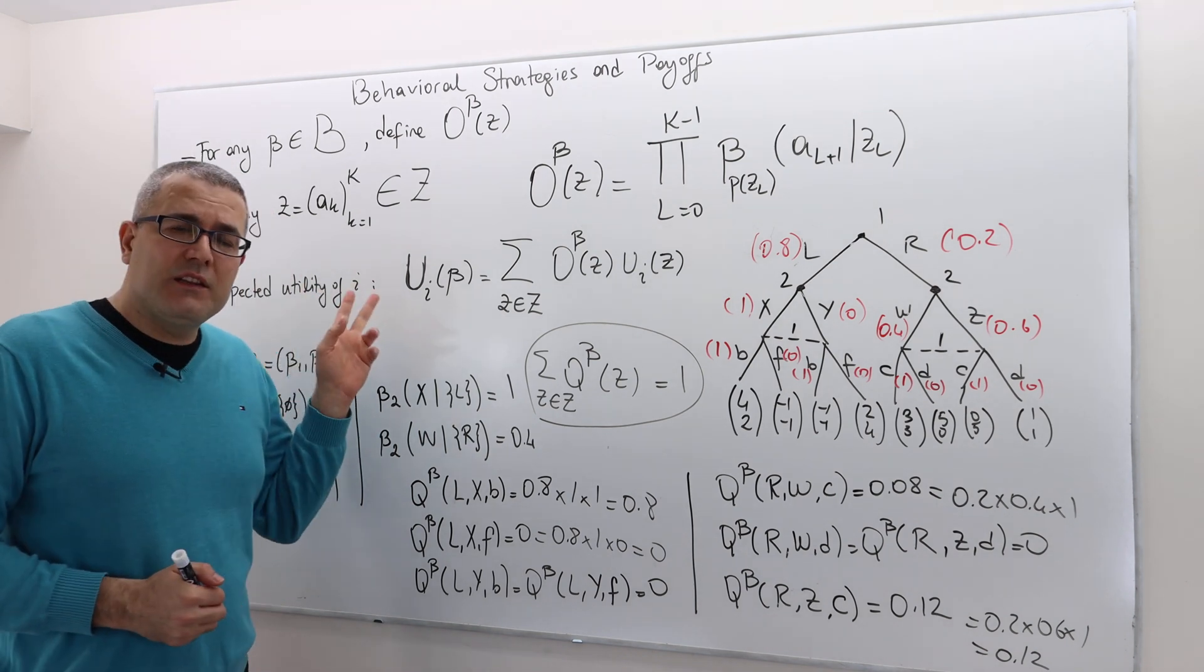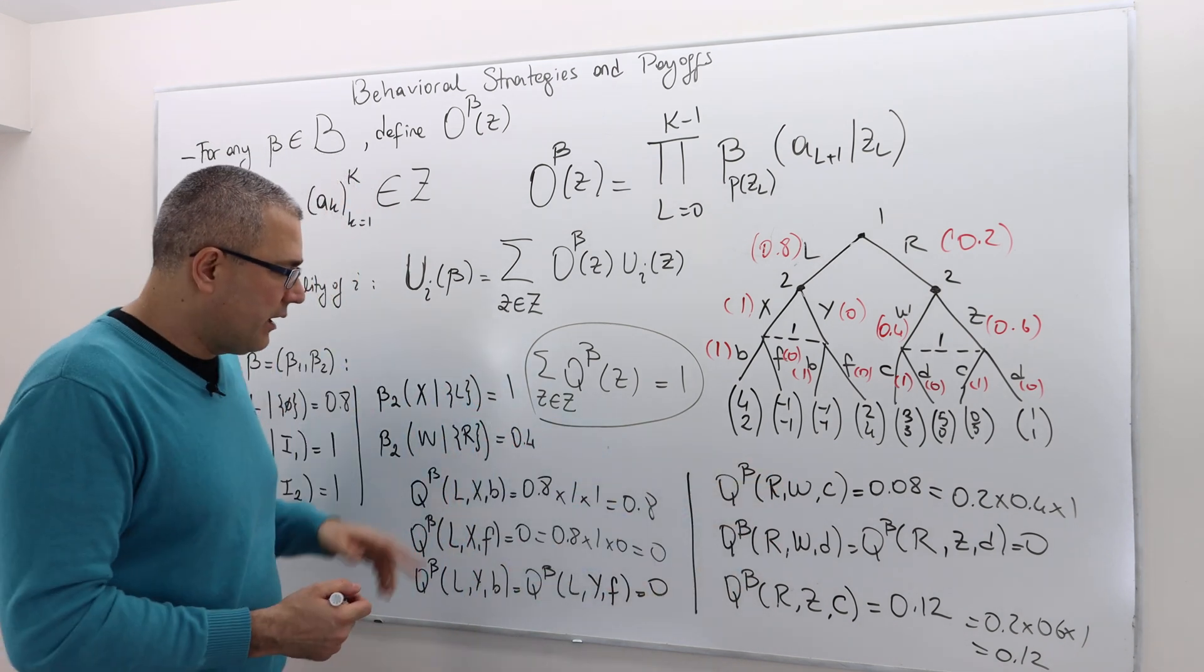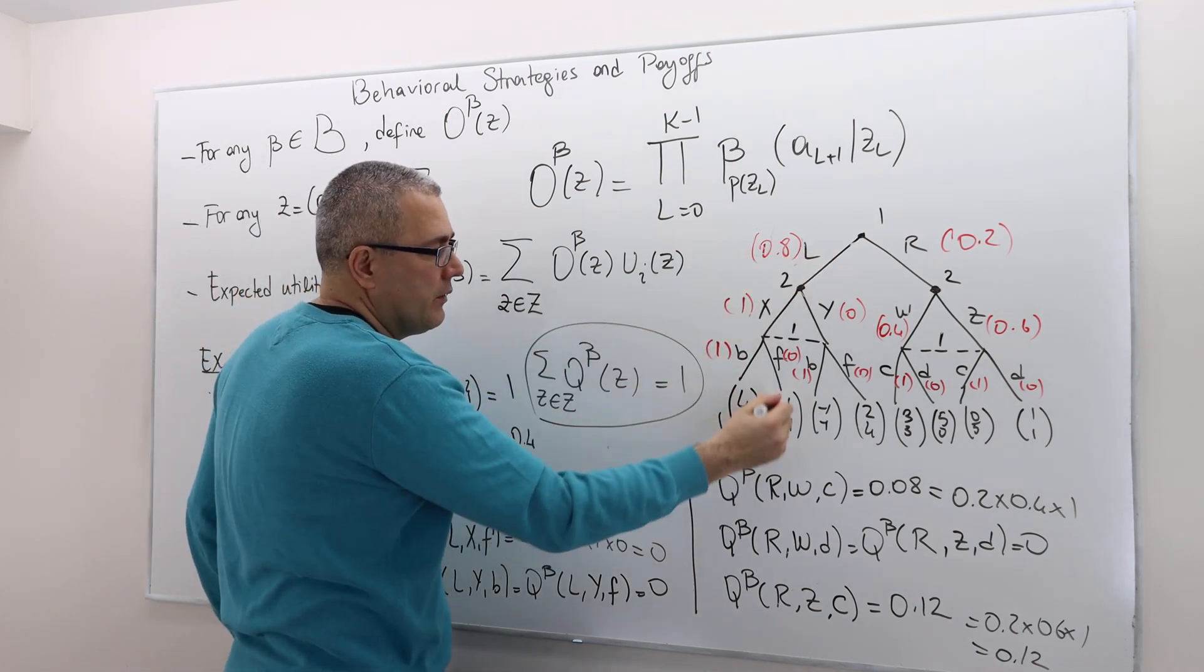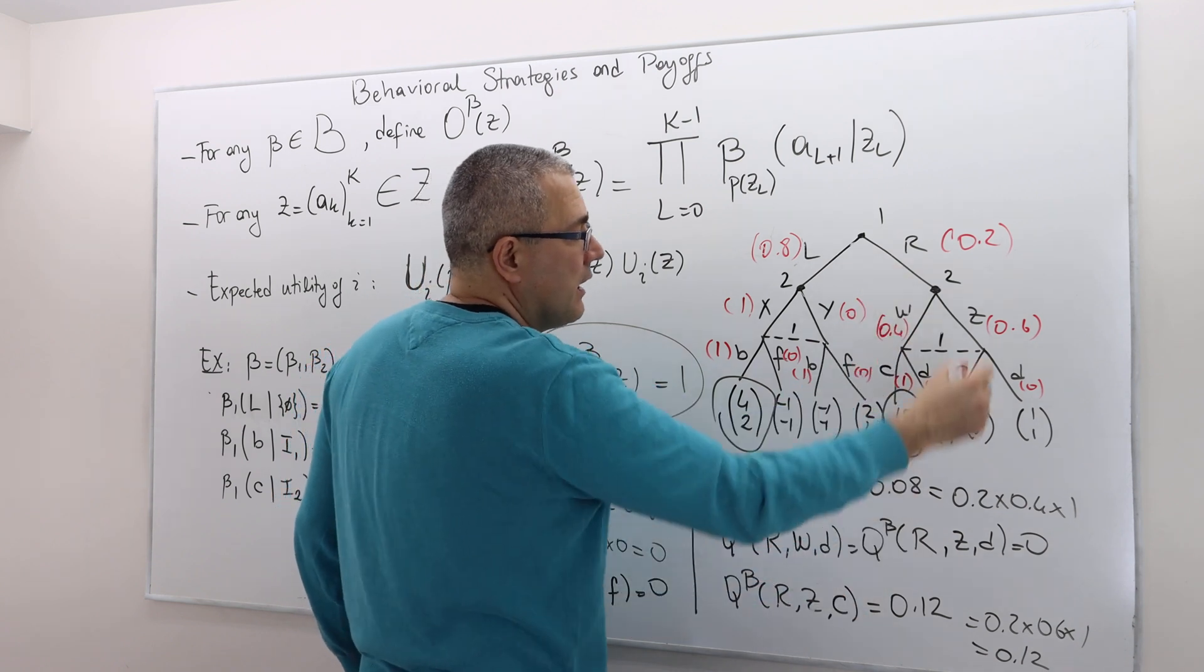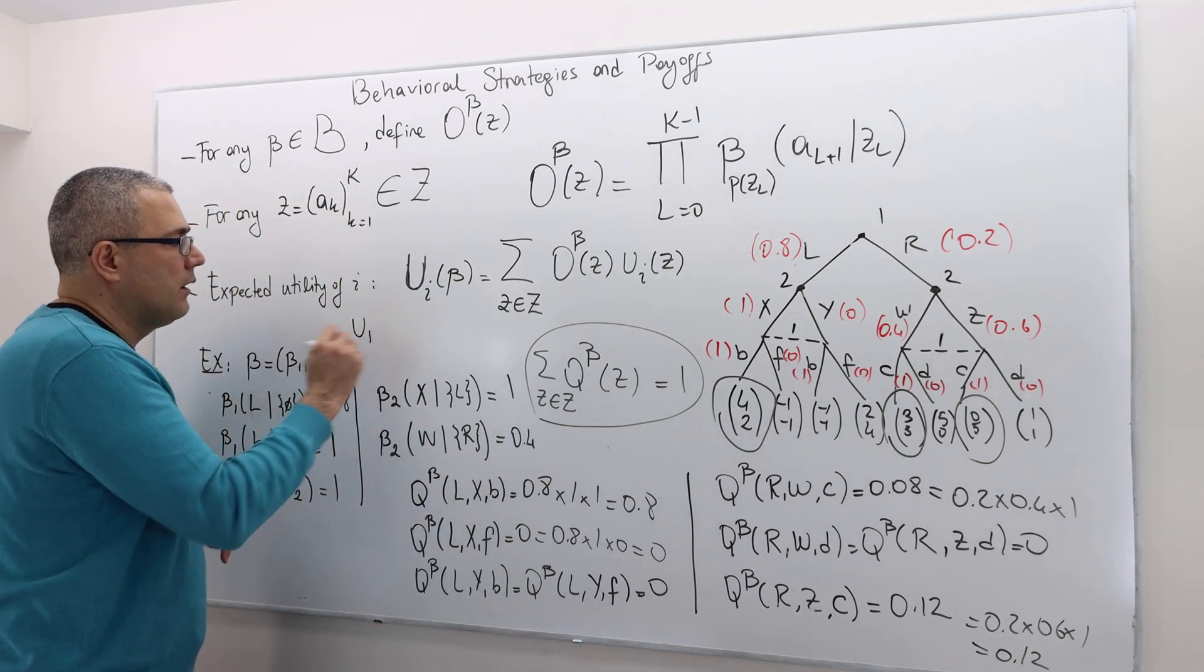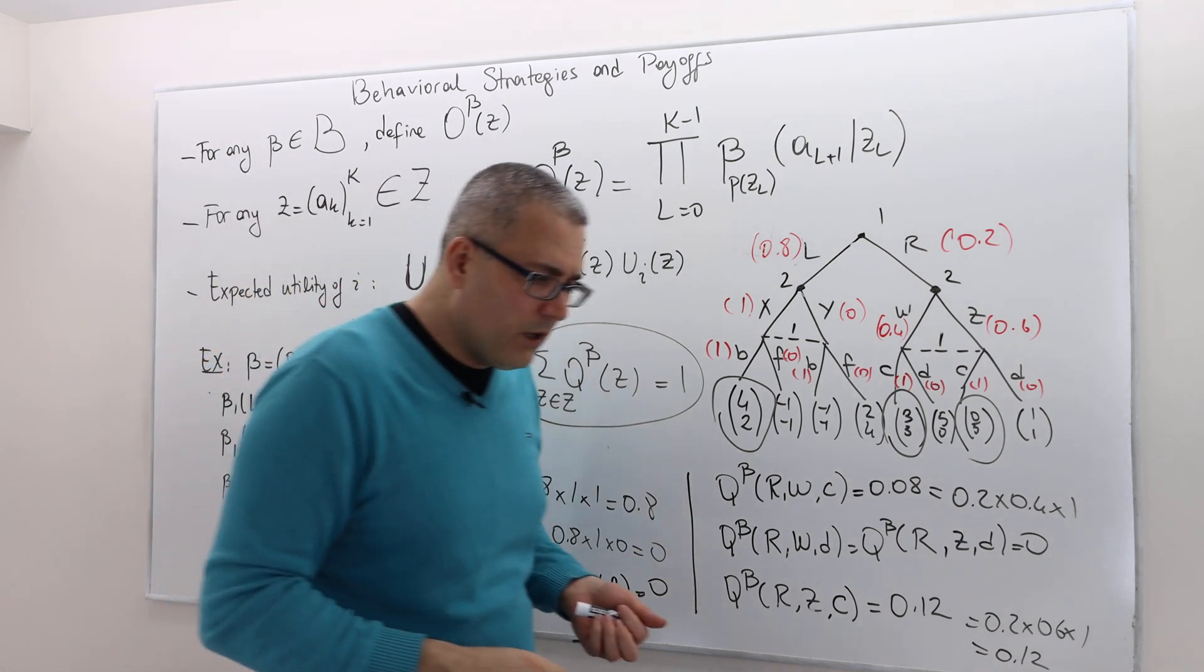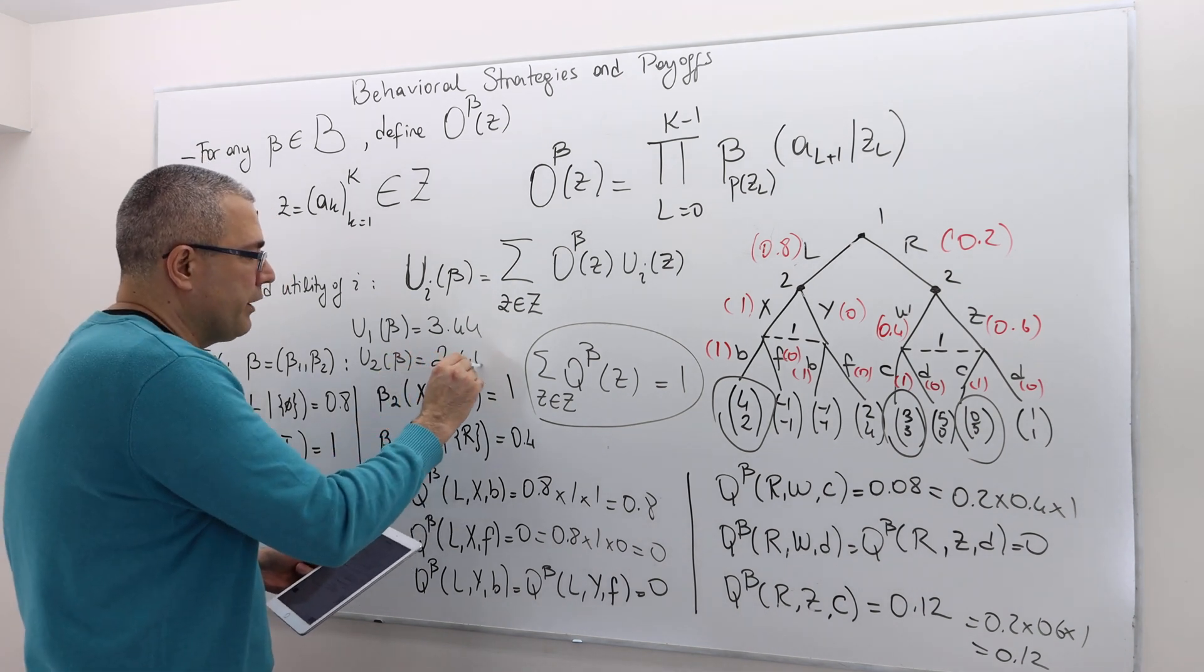If you remember the mixed strategy we used in the previous episode, we got exactly the same probabilities. There are basically three terminal histories with positive probability. The first one is LXB, the second one is RWC, and the third one is RZC. The probabilities are exactly the same. If you calculate the expected utility of player 1 under β and expected utility of player 2 under β, you're going to get exactly the same number. If I'm not mistaken, that was 3.44, and then the second player was 2.44.